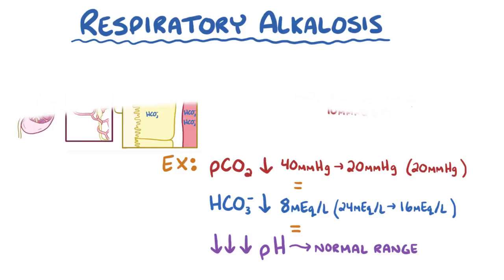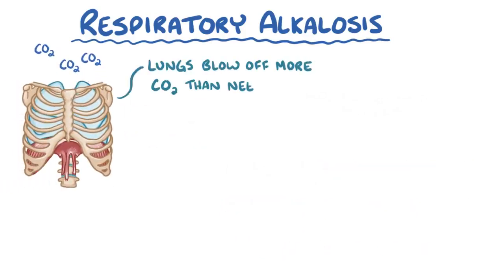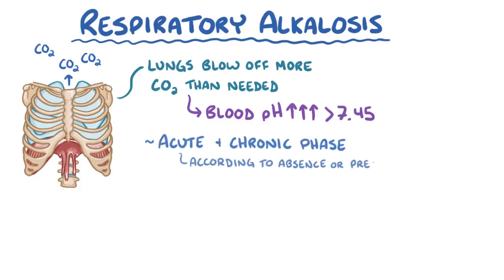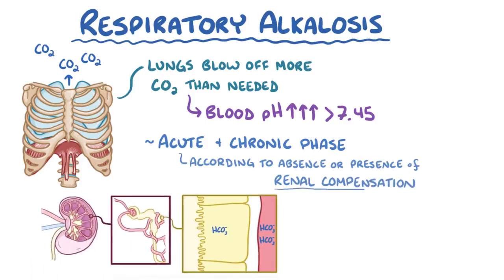As a quick recap, respiratory alkalosis happens when the lungs blow off more carbon dioxide than needed, which causes blood pH to increase above 7.45. It can be divided into an acute and a chronic phase, according to the absence or presence of renal compensation, respectively, which decreases bicarbonate concentration in the blood.